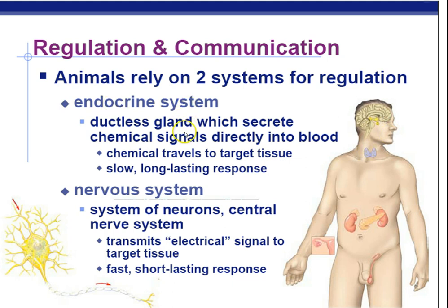Endocrine glands are ductless — they release stuff right into the blood. The pancreas has both endocrine and exocrine function. The endocrine function is to secrete the hormones insulin and glucagon directly into the bloodstream. But it also has an exocrine gland function in that it can release digestive enzymes directly into the small intestine without going through the blood at all.